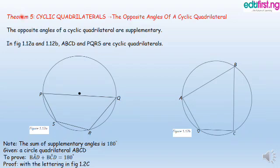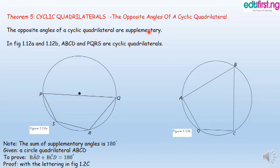Theorem 5: Cyclic Quadrilaterals. The opposite angles of a cyclic quadrilateral — this is the theorem. The opposite angles of a cyclic quadrilateral are supplementary, meaning the opposite angles of a cyclic quadrilateral are equal to 180 degrees.